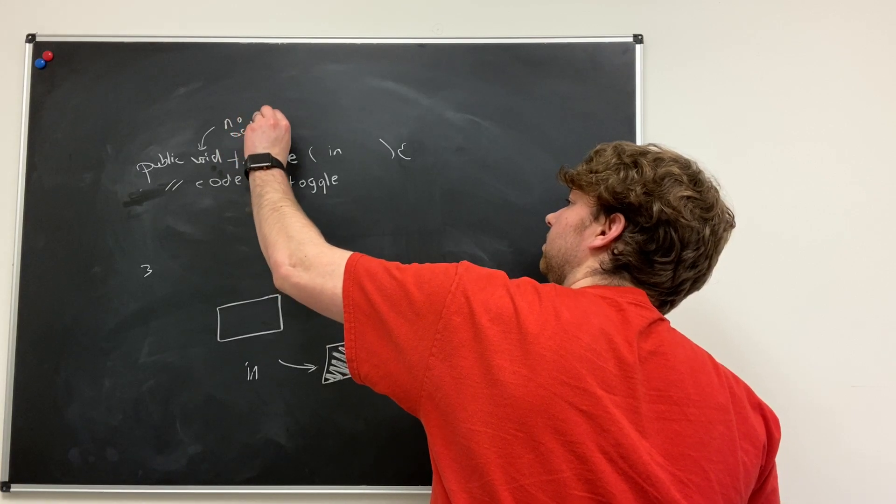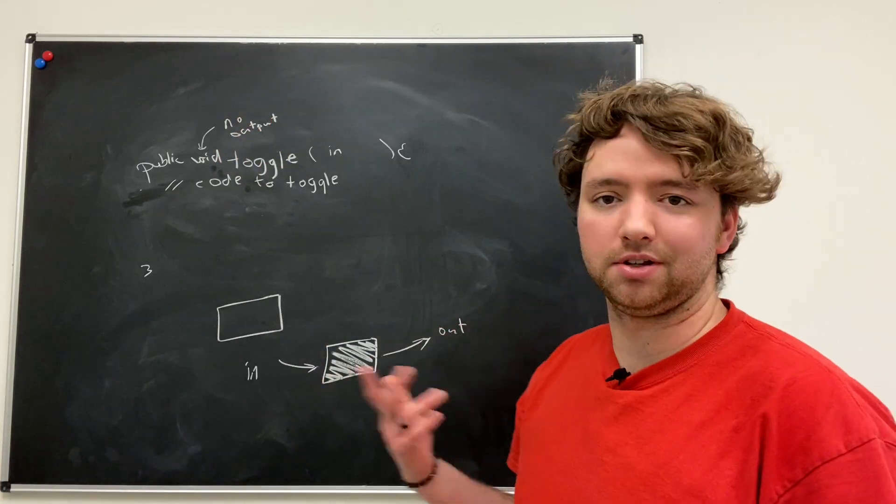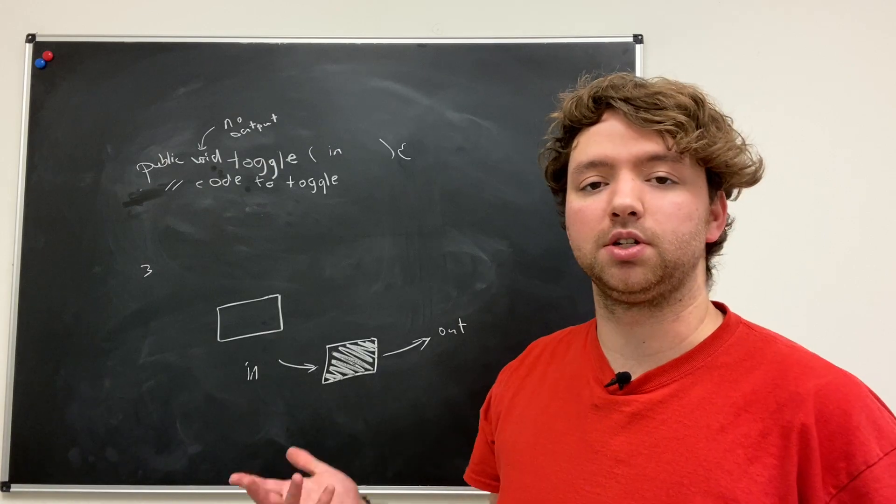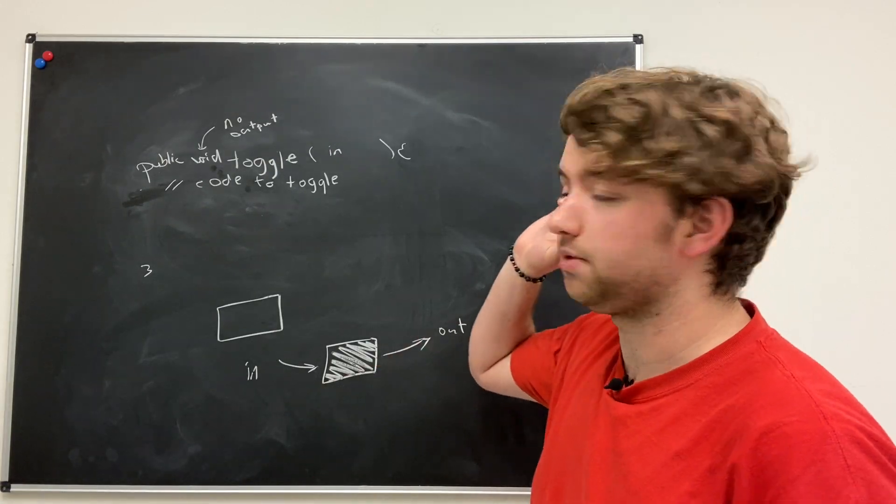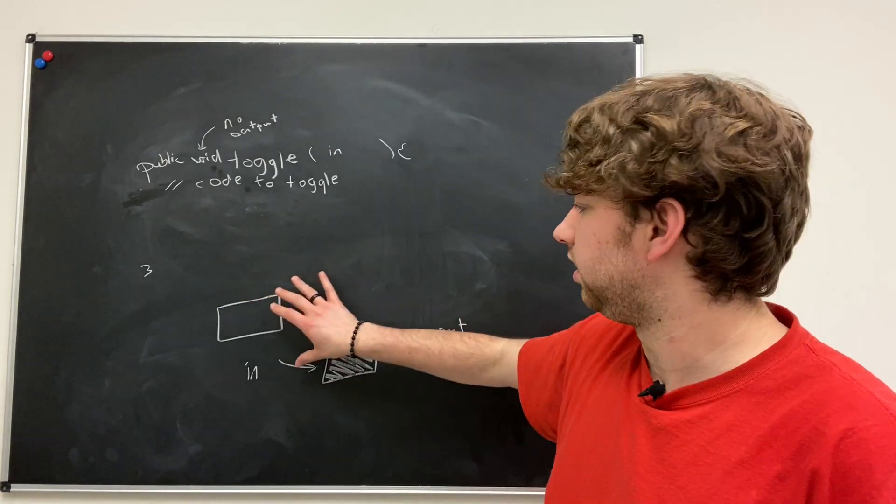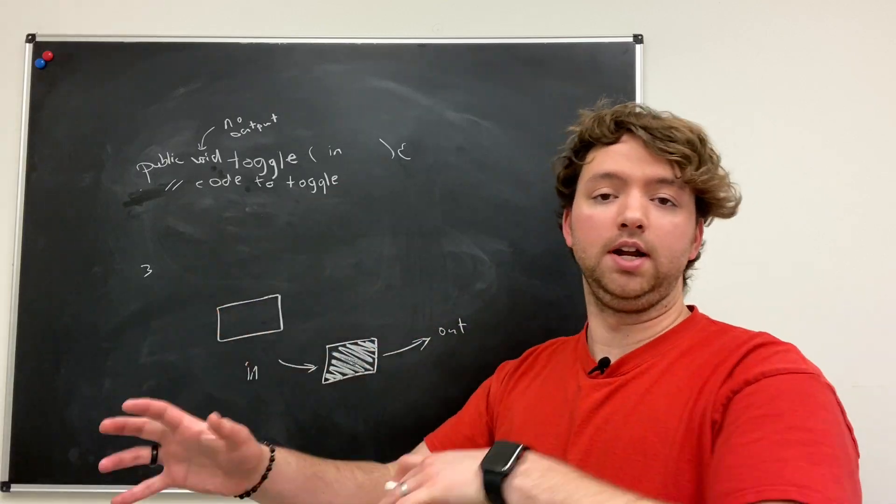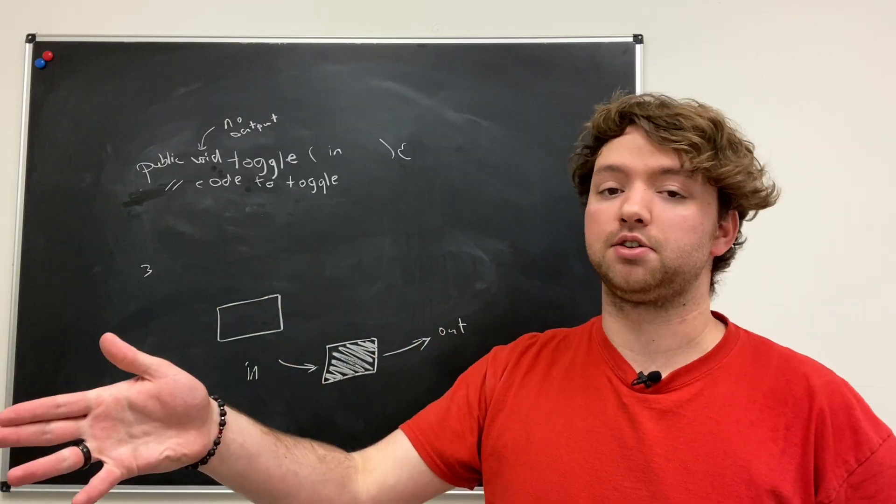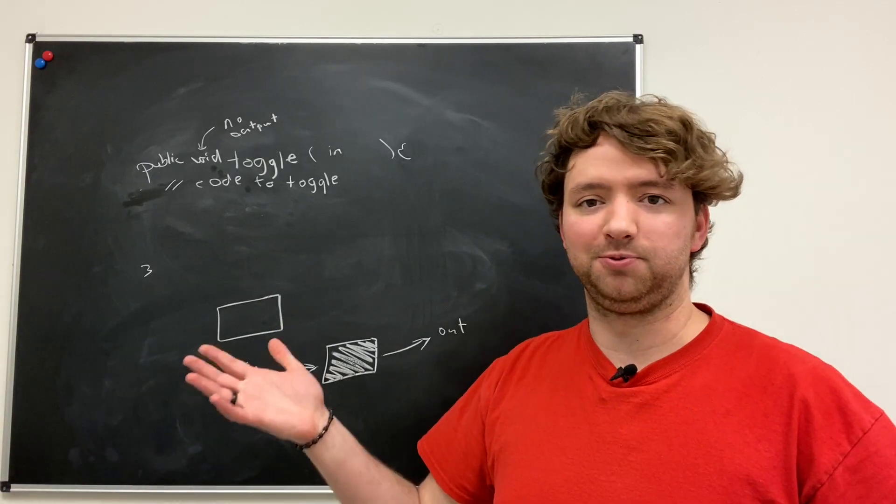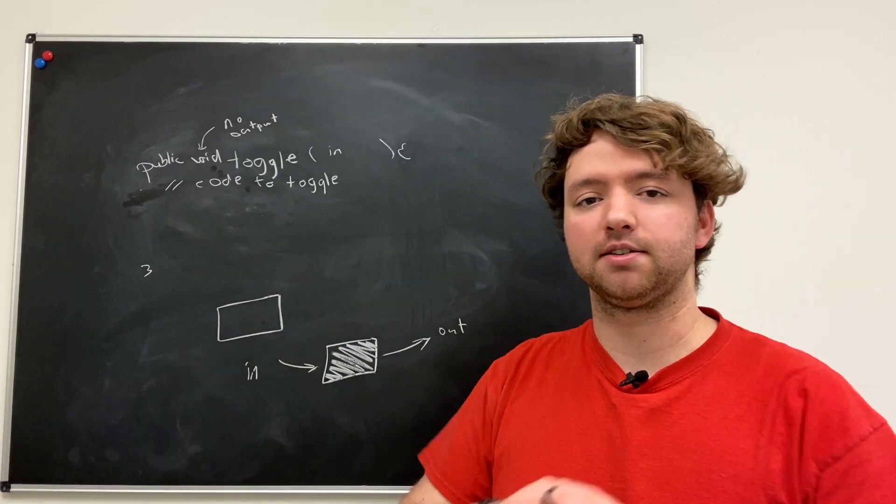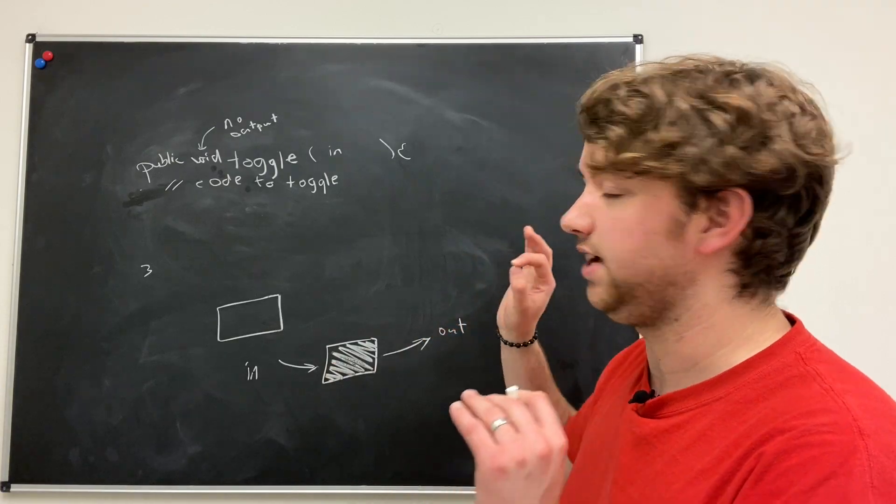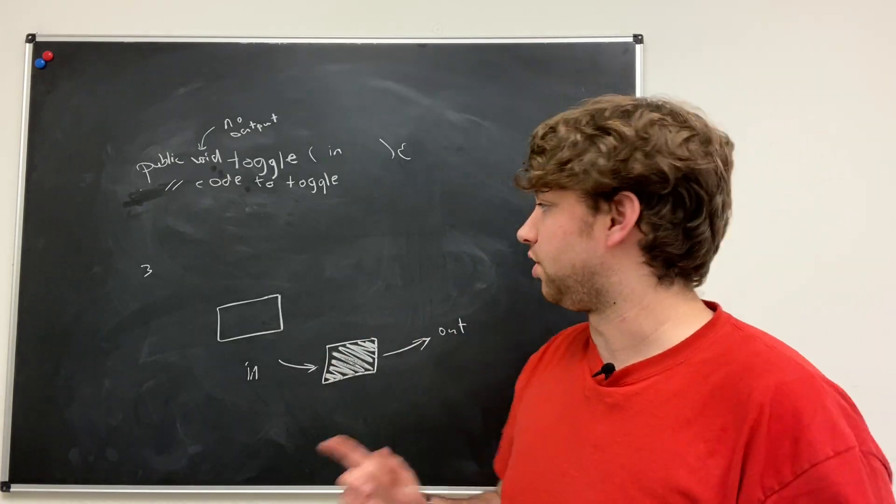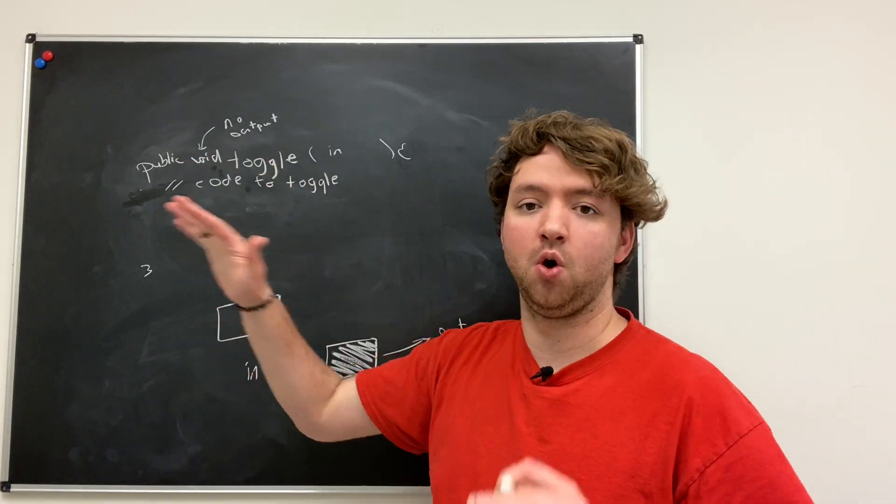This void means no output, meaning it's not going to calculate something and give you back a number, it's just going to do it. When you say hey toggle, it's going to change from green to red and then it's done. It doesn't give you back a message saying the toggling was a success or it changed to green or red. It just does its task and it's done.